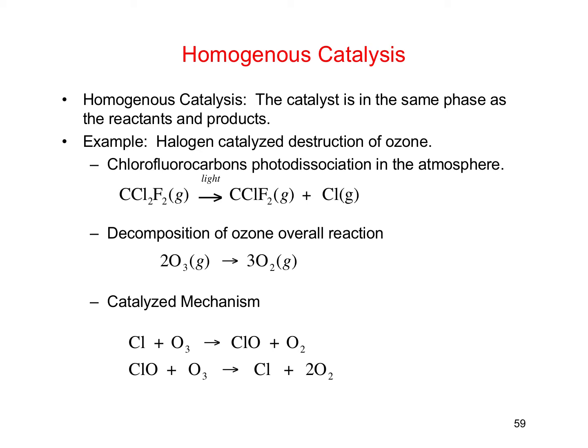This example represents another important feature of catalysts: a catalyst, just like an intermediate, gets cancelled out when we write the overall reaction. In this case, the Cl cancels with the Cl, and the ClO cancels with the ClO. But the difference is that the catalyst first appears as a reactant and then gets reproduced before the end of the reaction, so it is free to go on and catalyze more reactions. That's part of what makes catalysts so efficient — one catalyst molecule can catalyze multiple reactions. ClO is an intermediate because it first appears as a product and then gets used up before the end of the reaction. A catalyst appears first as a reactant, then gets reproduced as a product.